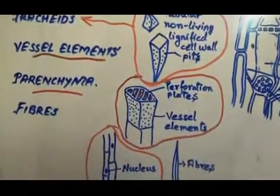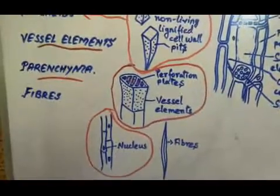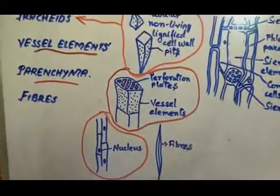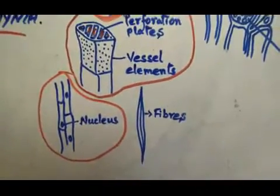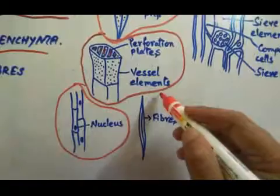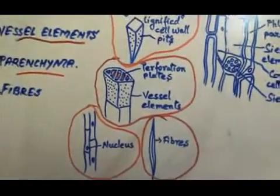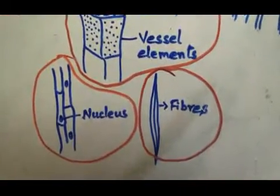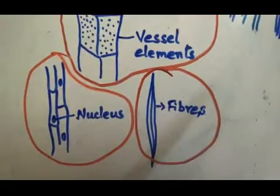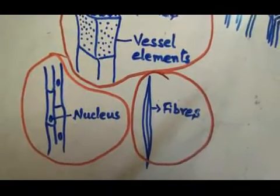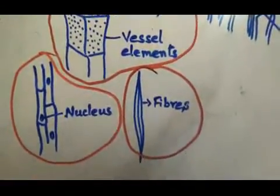The xylem fibers are sclerenchyma fibers connected with the tracheids and the vessels. They are dead cells with thick cell walls. They provide strength and rigidity to the xylem tissues.